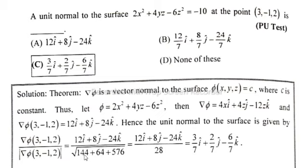Square root of 144 + 64 + 576, whole square root is equal to 28. So take 4 common: 4×7 = 28. So 4×3 = 12, 4×2 = 8, 4×6 = 24. Therefore, 3/7 i + 2/7 j - 6/7 k unit vector. So option C is correct.